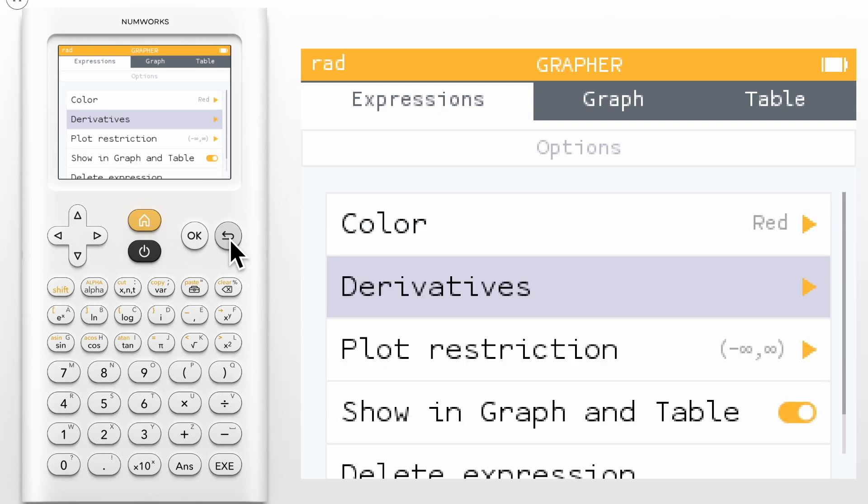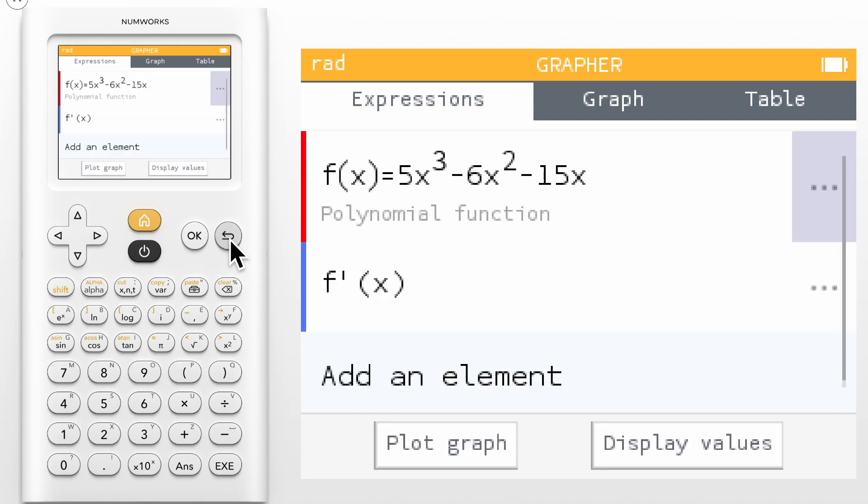Backing out of the Options, you can see that f' has been added to our Expressions list. You can now view the graph of the first derivative in the Graph tab.